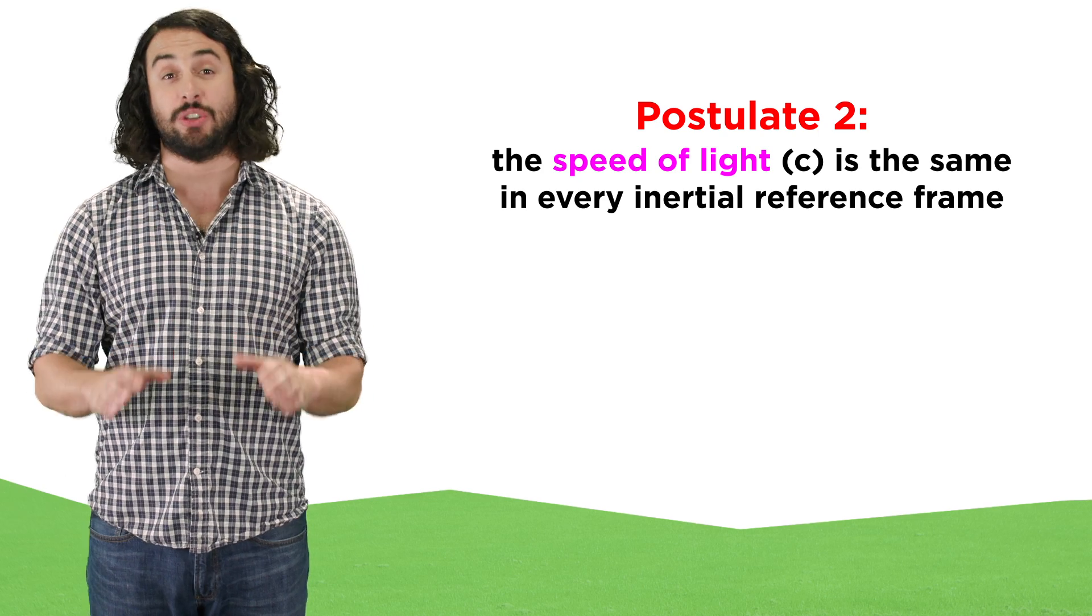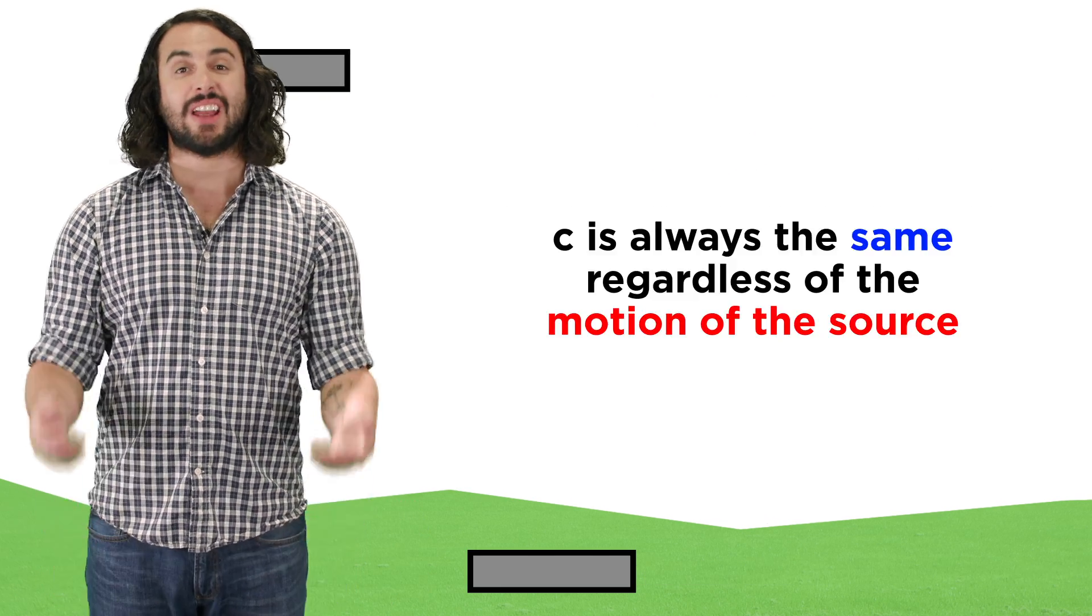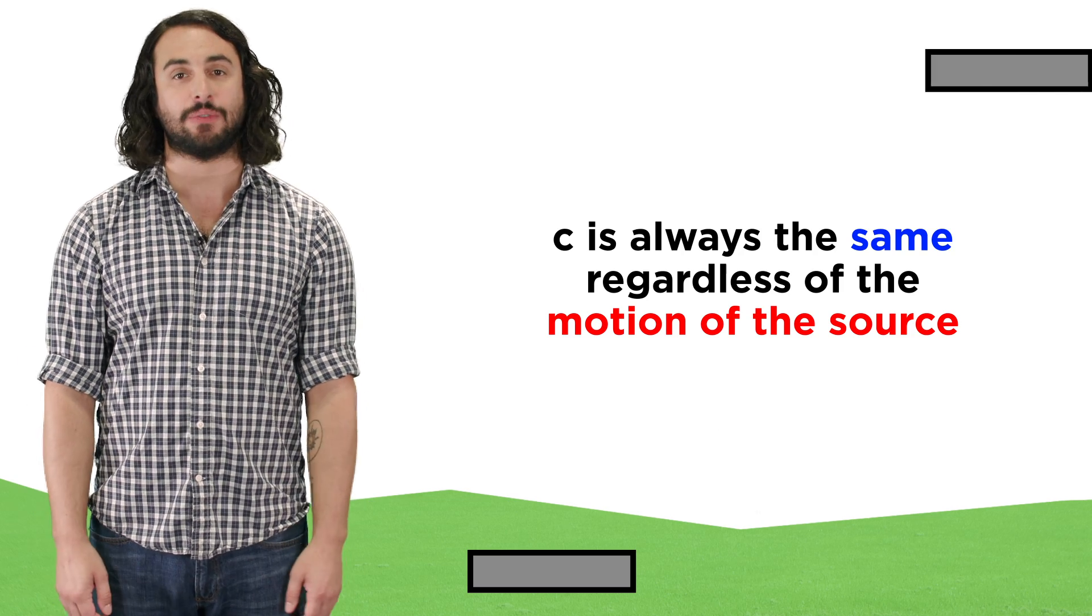No matter what you do, it's the same. Experiments have verified this, because when comparing two objects emitting light, one stationary and one in motion, they always yield the same value for the speed of light.